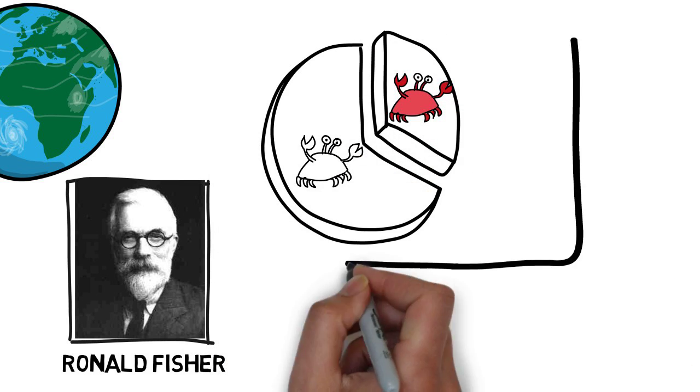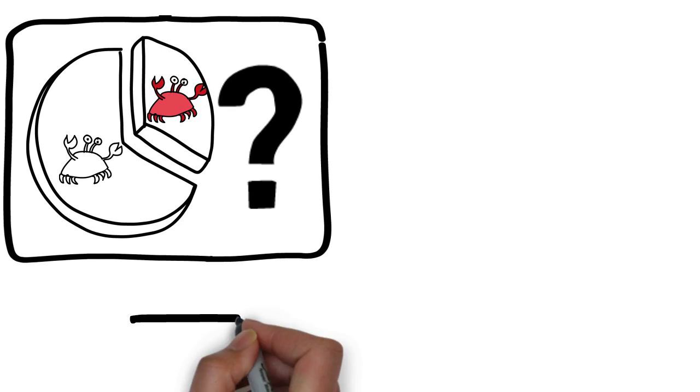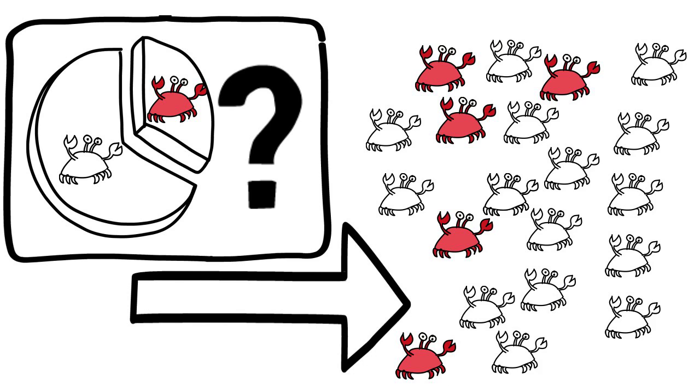If we want to really try and falsify an idea, said Fisher, what we really want to know is how well the data in the sample we observe fit with the idea we've proposed. We want to ask, if my idea were true, how unusual would my observations be? In other words, what we ideally want is a measure of the chances of getting the data we've got under the assumption that our idea is true.